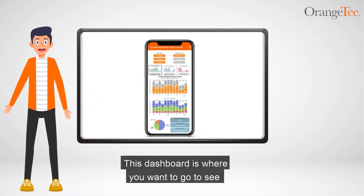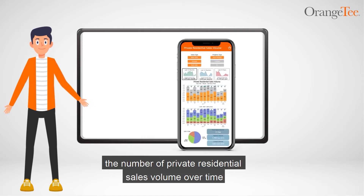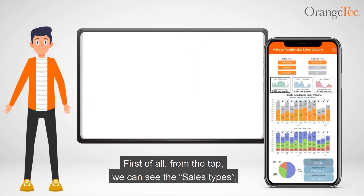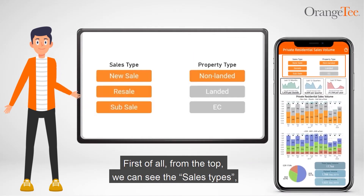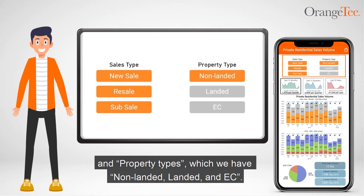This dashboard is where you want to go to see the number of private residential sales volume over time. From the top, we can see the sales types, which are new sale, resale, and sub sale. And property types, which we have non-landed, landed, and EC.